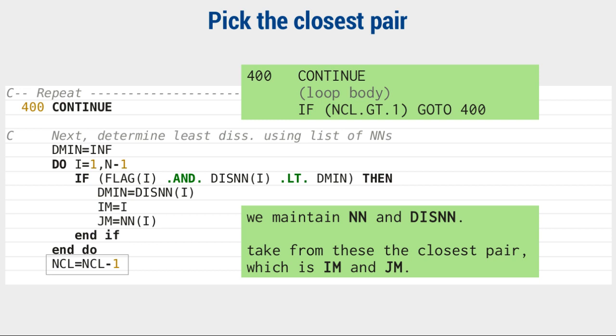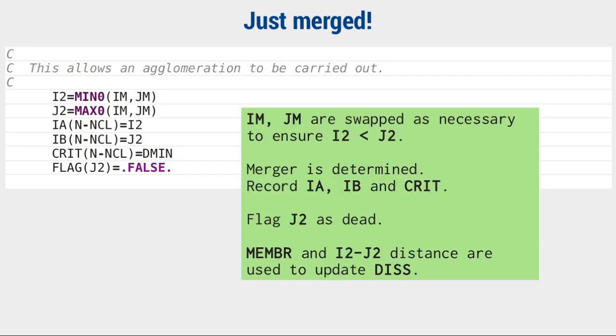They get married right away, which begins by aliasing their indices to i2 and j2, ensuring j2 is greater, then registering their union in iA, iB, and crit, and declaring j2 as dead. Observe, by the way, members isn't updated yet, because the old value is used in updating the dissimilarity matrix.